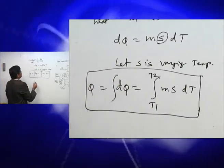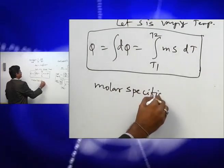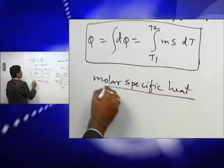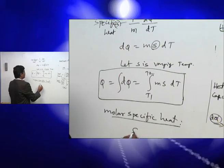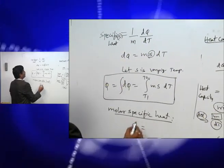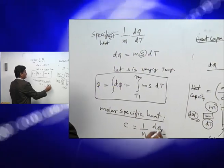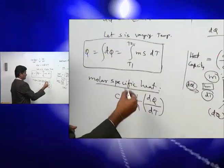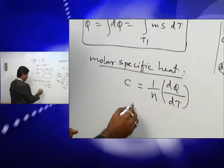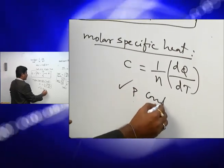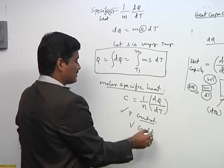In the context of gases, we use molar specific heat. Instead of mass, we take the number of moles N. The molar specific heat C is given by C equals (1/N) times DQ/DT. For gases, we must maintain either constant pressure or constant volume, and detailed discussion will follow in the next section.